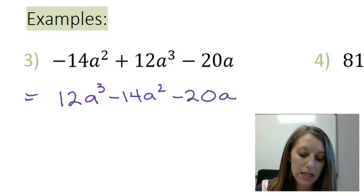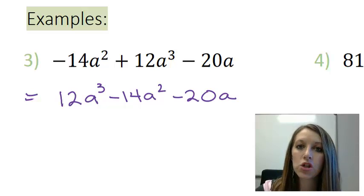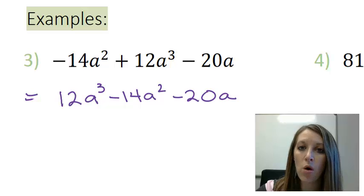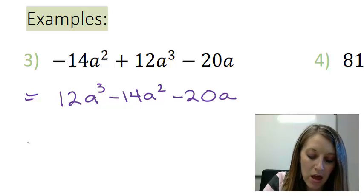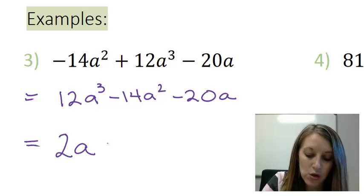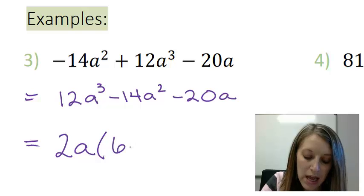Okay, so now that we have it in descending order, you might think that you can jump right into the trinomial part of this. But remember that the first technique that I taught you is common factor, and we should always look for that first. Well, that applies here even though this is a trinomial overall. Common factor always comes first. So if I look throughout all three terms, I have a common factor of 2 and a. So if I factor out a 2a, that gives me 6a² - 7a - 10.